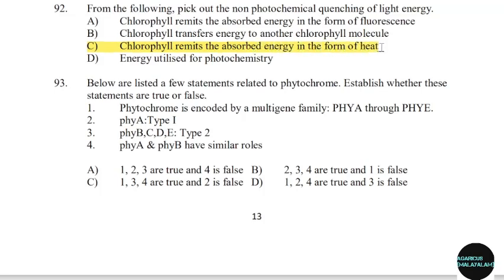93rd question: Below are listed a few statements related to phytochrome. Establish whether these statements are true or false. Correct answer: Option A — 1, 2, 3 are true and 4 is false.